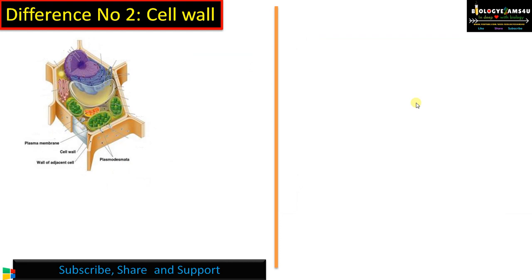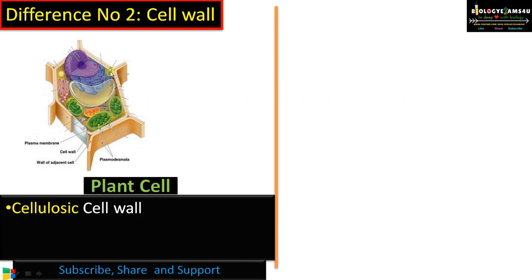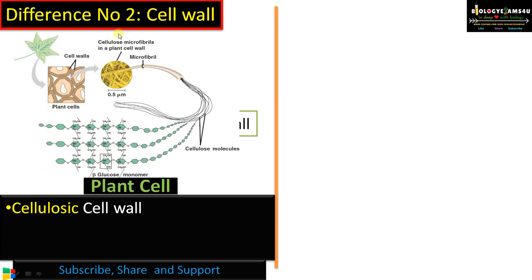Difference number two: cell wall. The plant cell wall is cellulosic. It is made up of cellulose, hemicellulose and pectin. The cell wall is made up of cellulose microfibrils, as you can see, and the monomeric unit is beta-D-glucose.